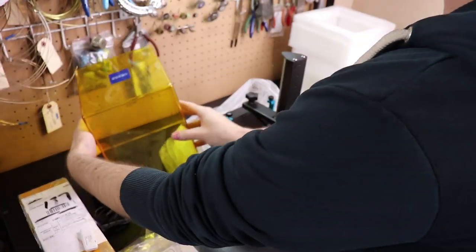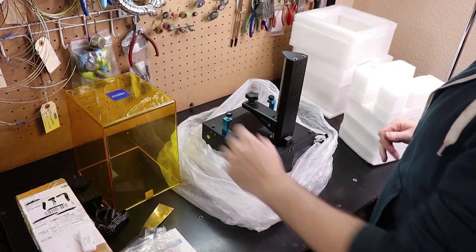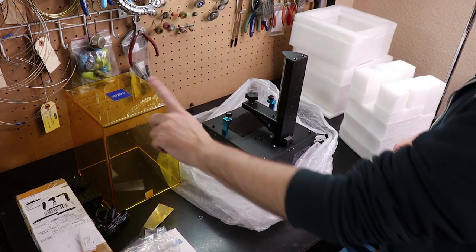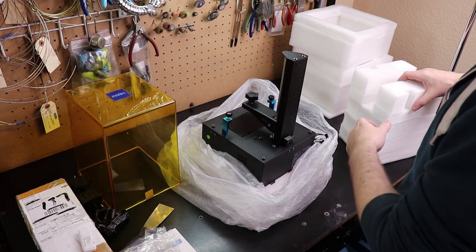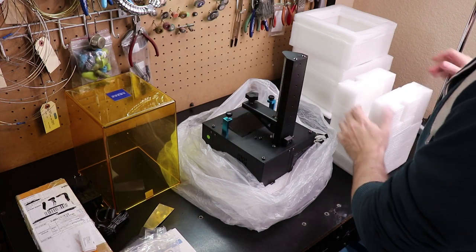This is the top cover, and you'll notice that it's a weird orange color. It's so it blocks out UV light, because if you have UV light coming in, it'll cure your stuff and then they won't work properly.